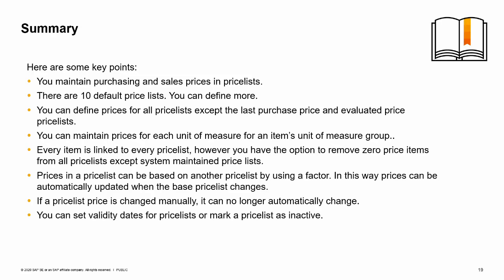You maintain purchasing and sales prices in price lists. There are 10 default price lists and you can define more. You can define prices for all price lists except the two system-maintained price lists — the last purchase price and evaluated price price lists. You can maintain prices for each unit of measure for an item. Every item is linked to every price list by default, but you have the option to remove zero price items from all price lists except the system-maintained ones. A price list can be based on another price list using a factor, so prices can be automatically updated when the base price list changes. If a price list price is changed manually, it can no longer automatically change. You can set validity dates for price lists or mark a price list as inactive. Configuration settings allow you to control where inactive price lists and their prices are displayed. You have completed the topic on creating price lists. Thank you for your time.